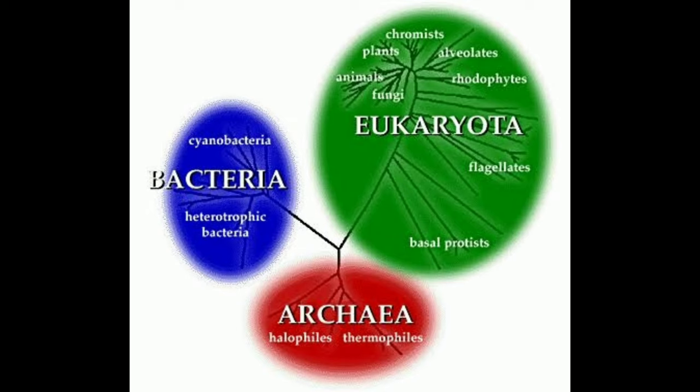Archaebacteria are similar to prokaryotes, but classified differently because they are so ancient — 'archi' means ancient. They are also called extremophiles because archaebacteria are found in extreme environments like saline hot springs. Fishes are included under domain Eukarya because all animals are made up of eukaryotic cells that have a nuclear envelope.